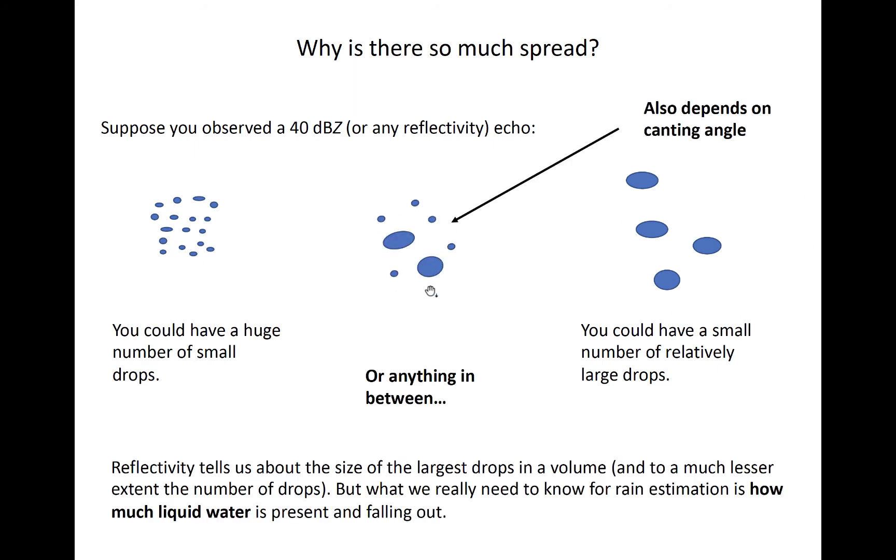The canting angles of the large drops matters as well because it affects the backscatter cross section to the radar, which is especially important for radars without dual-polarimetric capability.